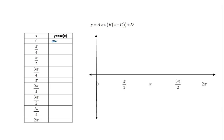For cosecant, I'm going to evaluate it as one over sine. I'll evaluate sine at these x-values and take the reciprocal — that'll be cosecant. Since sine of zero is zero, cosecant of zero is undefined. Sine of pi over four is root two over two, so the reciprocal is root two. Sine of pi over two is one, so cosecant is one. At three pi over four, cosecant is root two, and at pi, I'm undefined again.